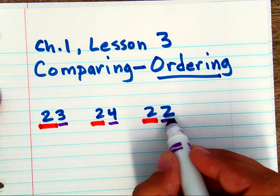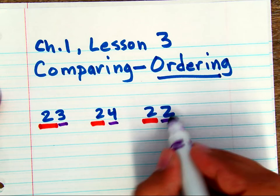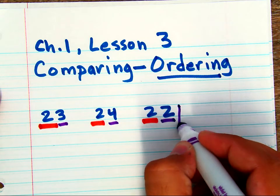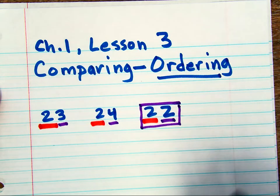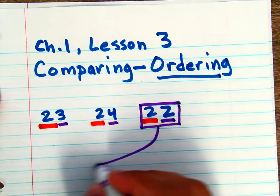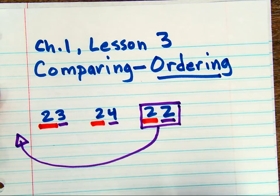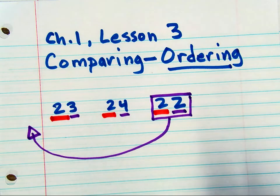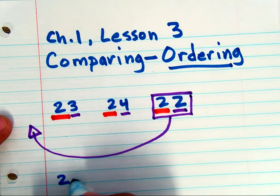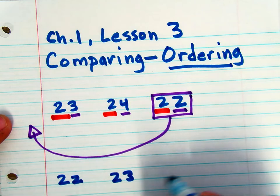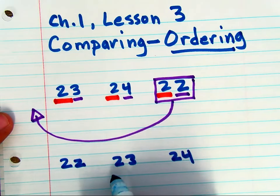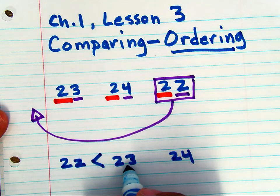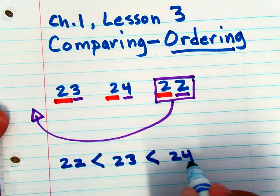Well, this ones place is a 2, so 22 is less than 23. So this whole number, 22, is in the wrong place. It should be over here in the beginning. So you would rewrite these numbers as 22, 23, and 24, with the less than signs showing that 22 is less than 23, and 23 is less than 24.